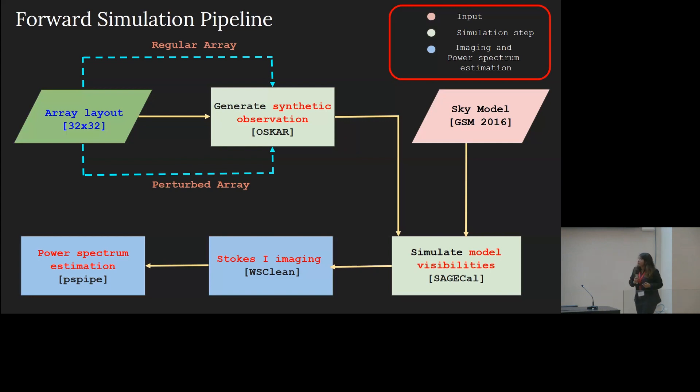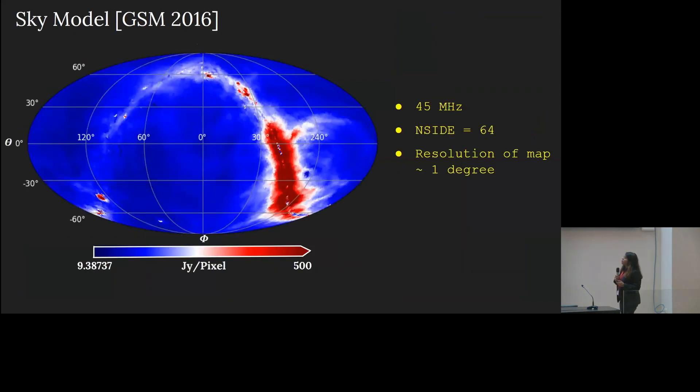Once we have the array layout, we generate mock interferometric observation using this software called OSCAR, and upon having the mock data, we introduce a sky model. Now, for the sky model, we start off with a diffused galactic radiation, and in the radio interferometry jargon, we call this the galactic foreground. And so, once we have the sky map, we can extrapolate it to our frequency with the help of the global sky model.